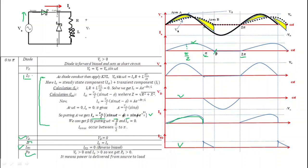The output power P0 equals V0 times i0. From 0 to π, both i0 and V0 are positive, so P0 is greater than zero. This means that from 0 to π, power is delivered from the source to the load.